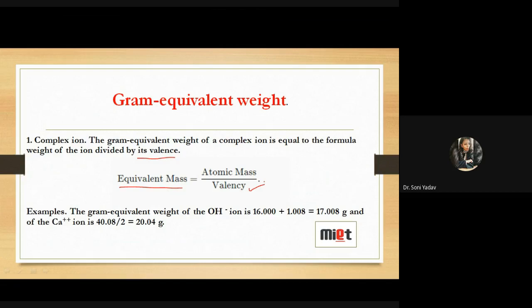For example, the gram equivalent weight of the OH⁻ ion nikalna hai. Iska total formula weight kya hoga? Oxygen ka 16 hota hai, hydrogen ka 1.008 hai. In dono ka sum liya — 17.008 — iska atomic mass. Aur isko divide karenge. Valency of OH⁻ ion is 1. So iska gram equivalent weight is 17.008.